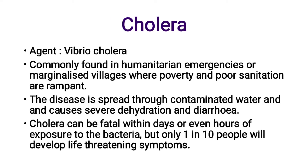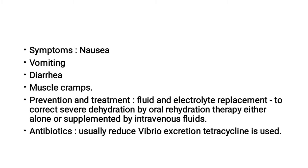Next, Cholera. The causative agent is Vibrio cholerae, commonly found in humanitarian emergencies or marginalized villages where poverty and poor sanitation are rampant. The disease is spread through contaminated water and causes severe dehydration and diarrhea. Cholera can be fatal within days or even hours of exposure to the bacteria, but only one in ten people will develop life-threatening symptoms. Symptoms include nausea, vomiting, diarrhea, and muscle cramps.